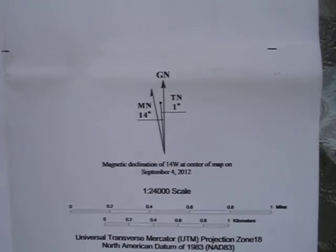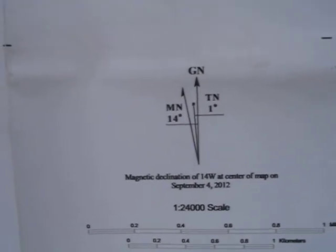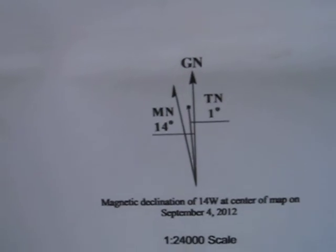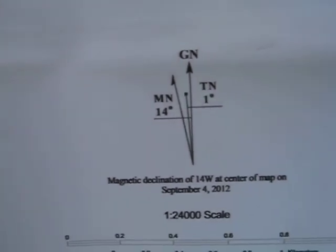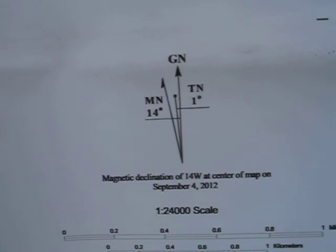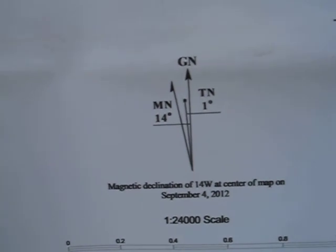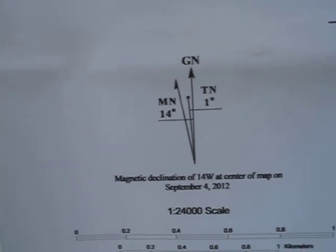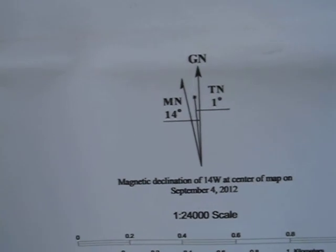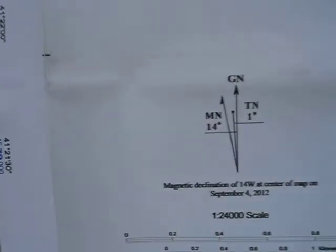In order to correctly orientate your map, you must first learn how to read a declination scale. As you can see here, there are several markings. You have TN, which is True North. You have GN, which is Grid North. And you have MN, which is Magnetic North.